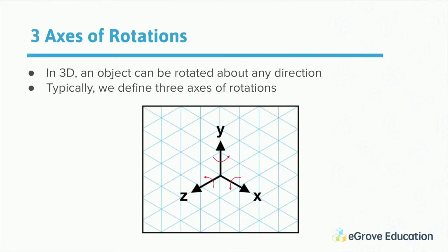Let's talk about three axes of rotation. In 3D, you can rotate an object about different axes, which we typically define as the X, Y, and Z axis. We use something called the right-hand rule, which tells you that if the X axis goes to the right and the Y axis goes up, then the Z axis goes in that direction. This is the standardized way to draw the Cartesian coordinate system.